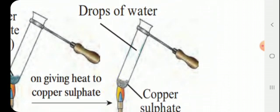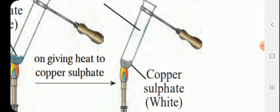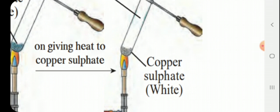In the second test tube, copper sulfate crystals are heated on the low flame of a burner and then the observation is made. On heating, the blue color of the crystals changes — the blue colored crystals turn into a white powder. The blue color has changed into white and white powder has been formed. When the second test tube is cooled down and some water is added and the test tube is shaken, what will be the observation?